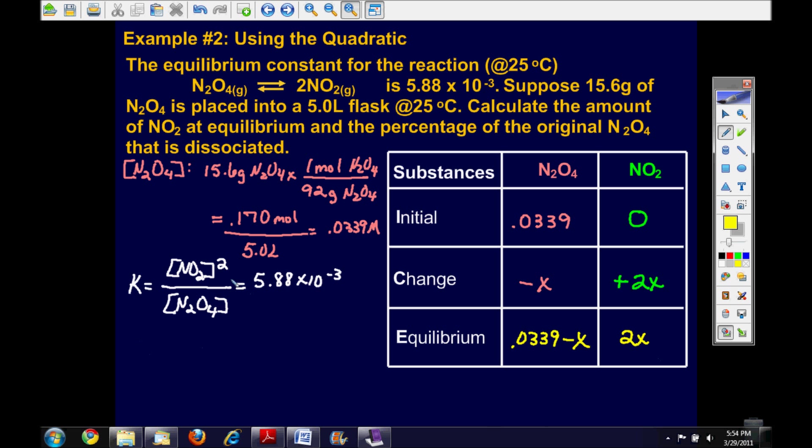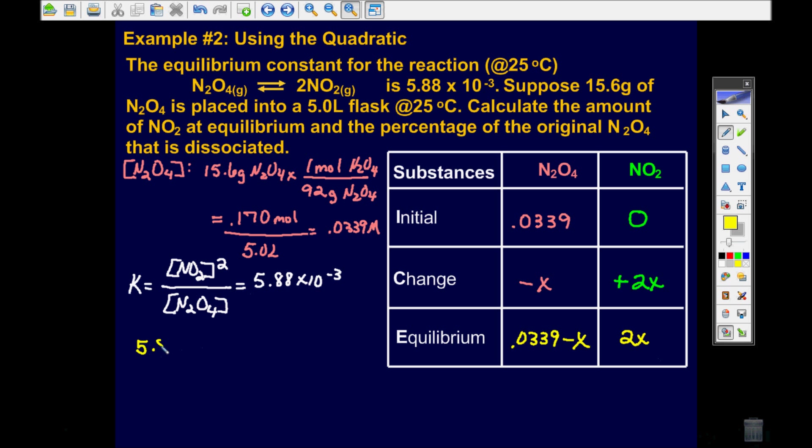I'm going to rearrange this just a little bit. So the NO2, that's the 2X part, it goes on the top, and remember it's squared in the equation. And so on the bottom, I'm going to put this 0.0339 minus X.